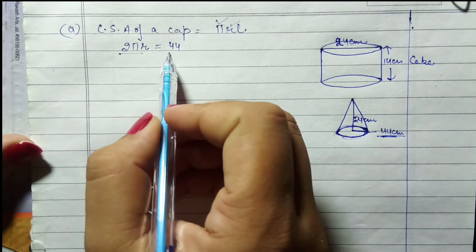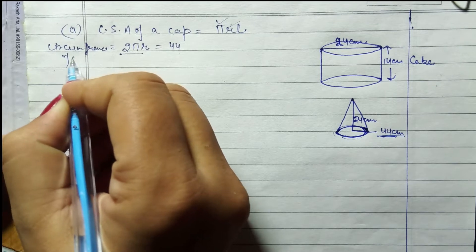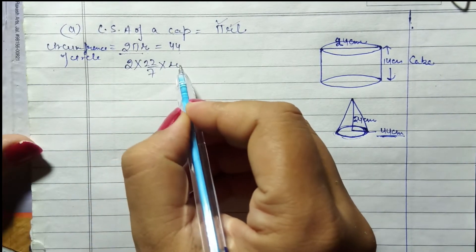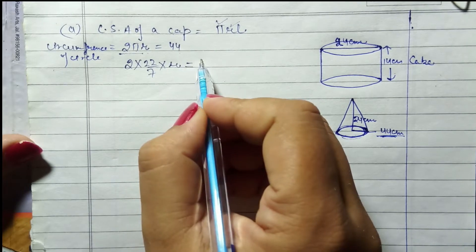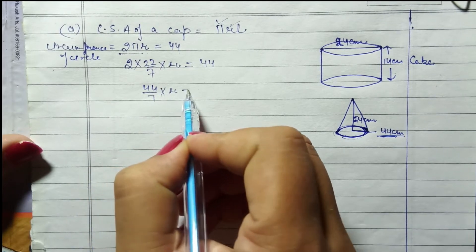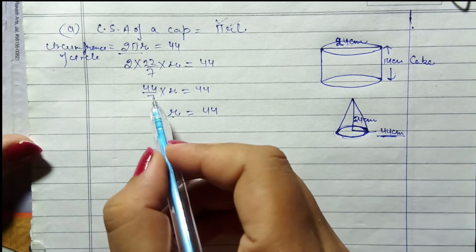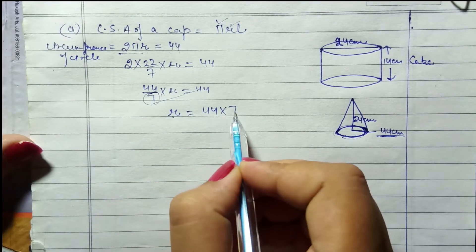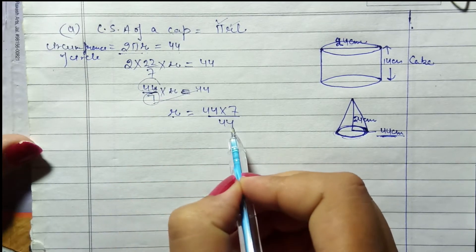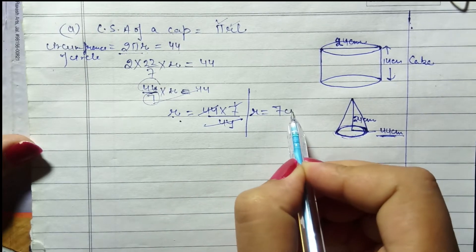Circumference of circle: 2 × (22/7) × r = 44. So 44/7 × r = 44. Yahan se r ki value: 44 numerator mein aur 44 cancel, toh r ki value 7 cm aa rahi hai.